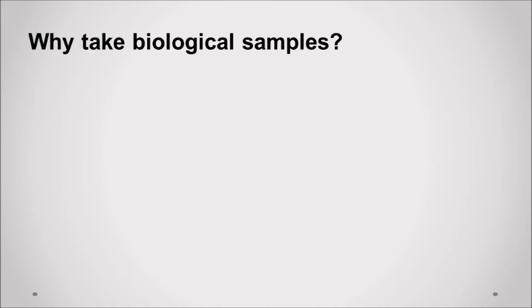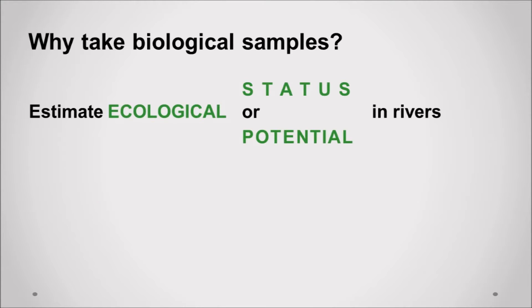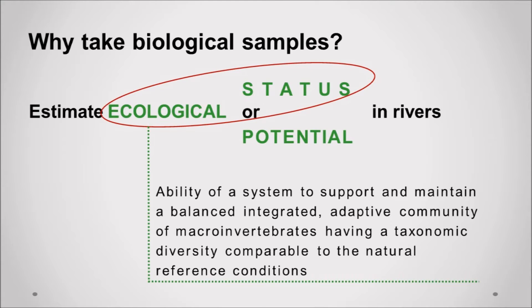Biological samples are taken in order to estimate a river's ecological status or potential. Ecological status can be defined as the ability of a system to support and maintain a balanced, integrated, adaptive community of macroinvertebrates having a taxonomic diversity, abundance and functional organization comparable to the natural reference conditions of the surface water type. The presence of macroinvertebrates is one of the most important criteria in the EU Water Framework Directive pertaining to a river's ecological status.